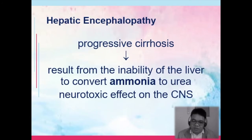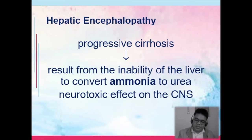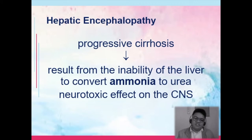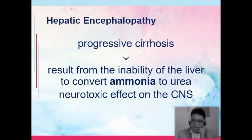Hepatic encephalopathy indicates progressive cirrhosis. It results from the inability of the liver to convert ammonia to urea. Ammonia is neurotoxic to the CNS. Protein is converted to ammonia, and ammonia prior to excretion is converted to urea. In liver cirrhosis, the liver is unable to convert ammonia to urea, so it accumulates in the central nervous system, the effect becomes cumulative, and it causes encephalopathy and eventually coma.